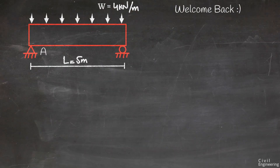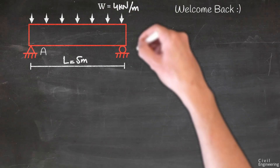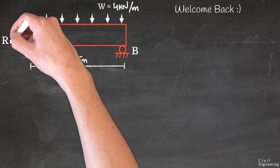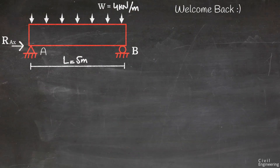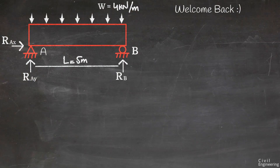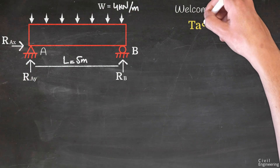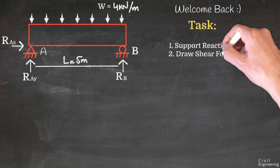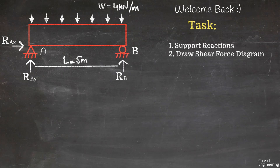It is a simply supported beam with two supports. Support A is a hinge support which can take the horizontal reaction RAX and also the vertical reaction RAY. On the other hand, support B is a roller support which can only take the vertical reaction. Our tasks are to find the support reactions, draw the shear force diagram, and draw the bending moment diagram for this beam.